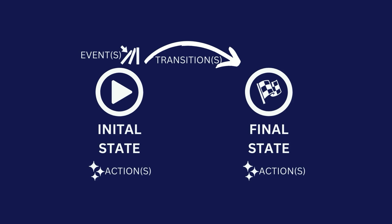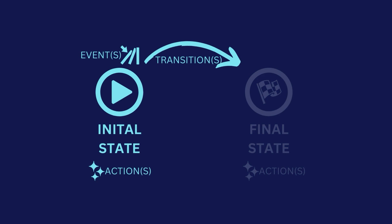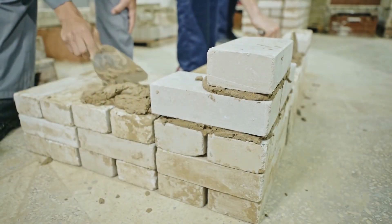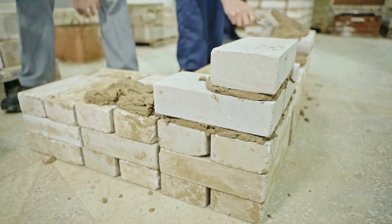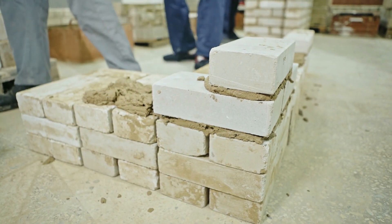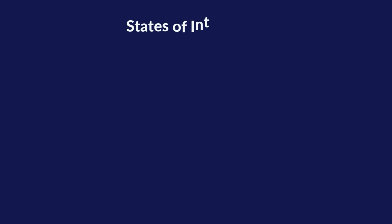In a complete implementation of a finite state machine, we would define a state which would have transitions to other states. There would also be events which would trigger these transitions, and actions which determine the behavior of the system when it's in that state. The implementation we're looking into today will be a very simple version. You can take it as a base and expand on it, or make it even simpler. Let's first have a look at what we're trying to achieve.